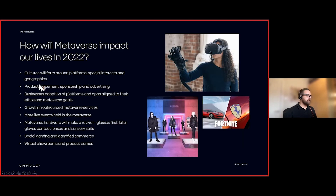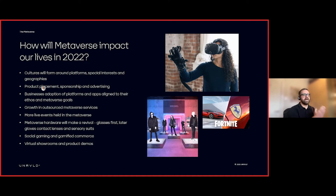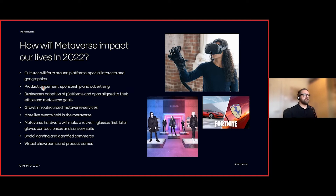Over the next 12 months, cultures will start forming around specific platforms — specialist interest groups, geographies — which will be great for product placement and sponsorship. Businesses are going to start adopting platforms that align best to their ethos and goals. A single platform utopia is unlikely in the near future; however, protocols being developed by platforms like Enjin will allow you to transfer your avatar from one platform to another or transfer your NFT collection from one game to another.